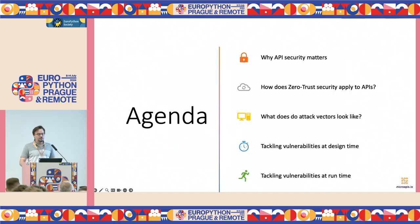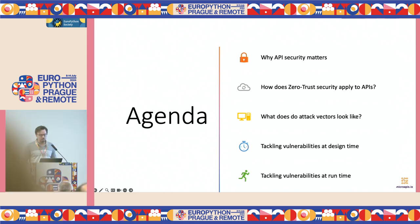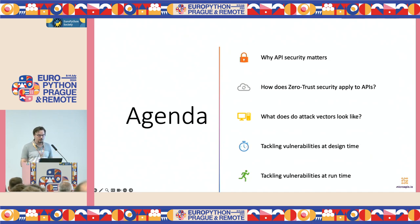The agenda for today: first, a brief introduction on the current state of API security and why it's important to focus on this more. Then I'll present the Zero Trust security model and how it applies to APIs. After that, we'll see examples — I put together a vulnerable API to showcase some of these vulnerabilities, how they work, and how to fix them. And importantly, we'll see how to discover vulnerabilities ahead of time with two testing strategies: at design time and at runtime, including the tools.